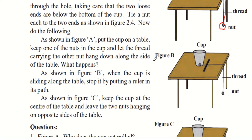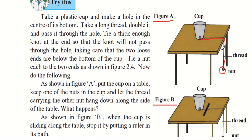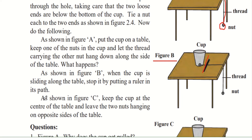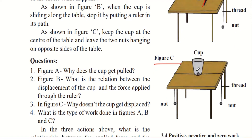As shown in figure B, the hanging nut pulls the cup because the cup is light plastic and the hole is not large enough for the nut to pass through. The cup starts sliding along the table. When it slides, place a ruler in its path to stop it. As shown in figure C, place the cup at the center of the table with one nut hanging on each opposite side — you will notice that the cup does not move.